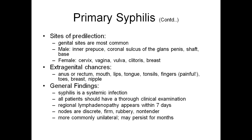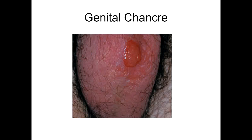General findings: syphilis is a systemic infection that can involve all organs of the body, so all patients should have a thorough clinical examination. Regional lymphadenopathy appears within seven days, and the first lymph nodes to appear are the epitrochlear lymph nodes, which are mostly missed on examination. Nodes are discrete, firm, rubbery, and non-tender — more commonly unilateral — and can persist for months.